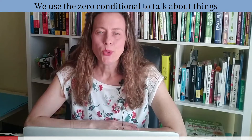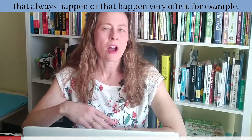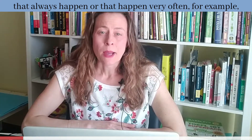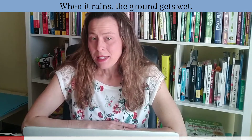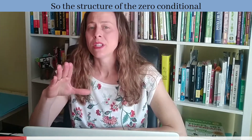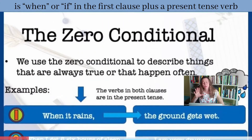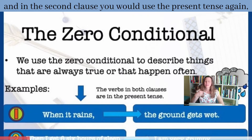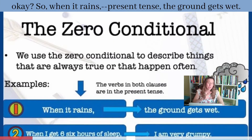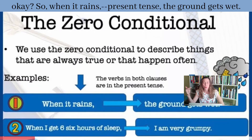We use the zero conditional to talk about things that always happen or that happen very often. For example, when it rains, the ground gets wet. The structure of the zero conditional is 'when' or 'if' in the first clause plus a present tense verb, and in the second clause you use the present tense again. So: when it rains — present tense — the ground gets wet.